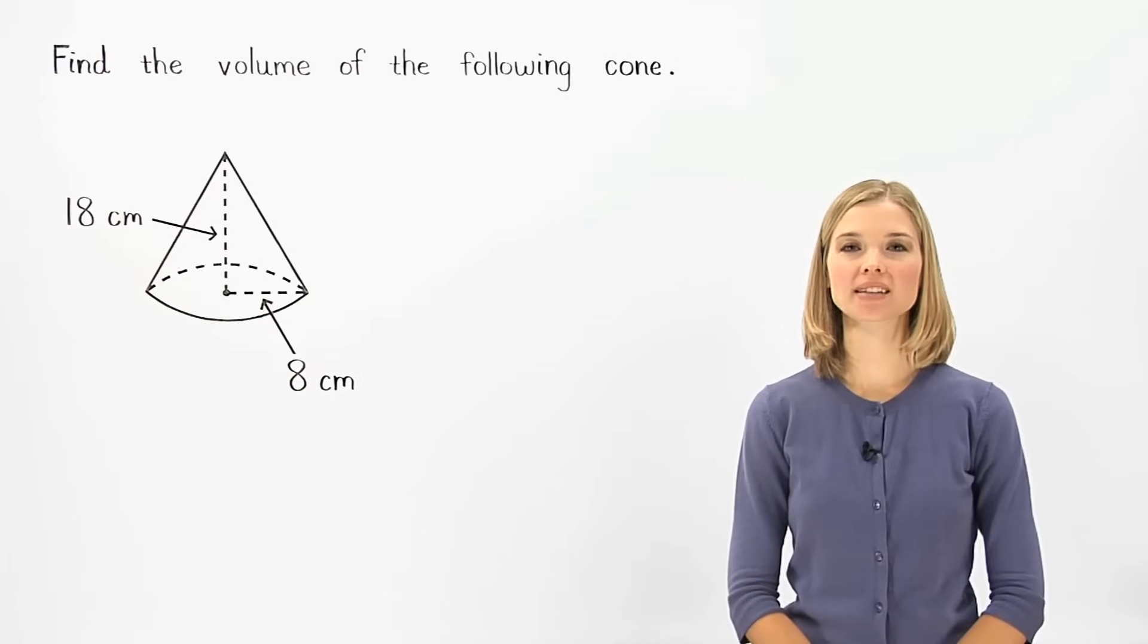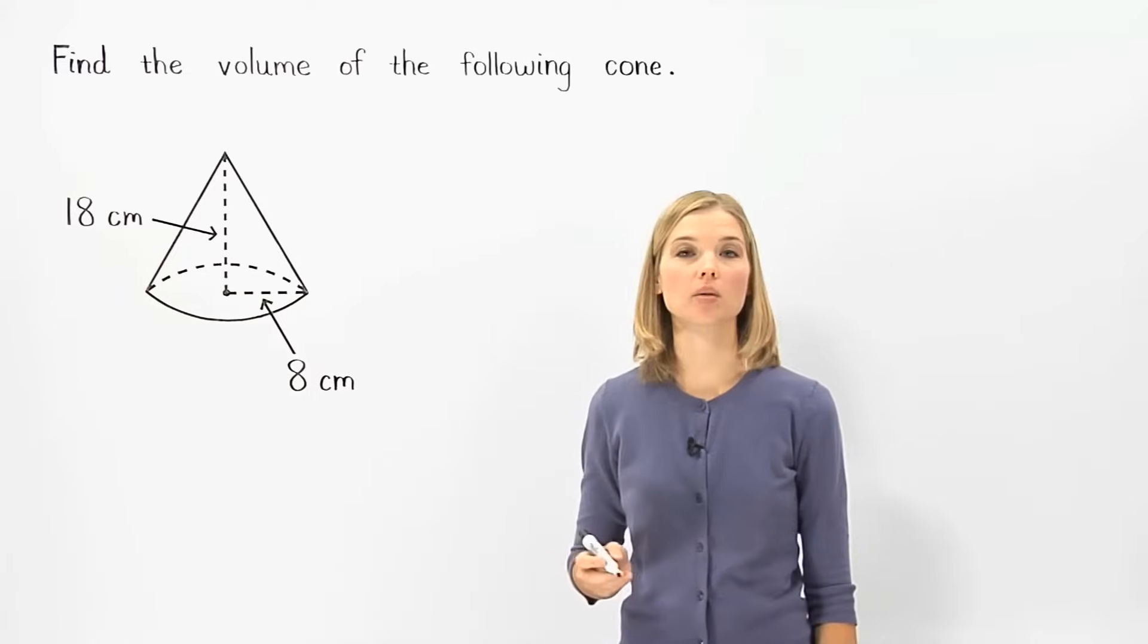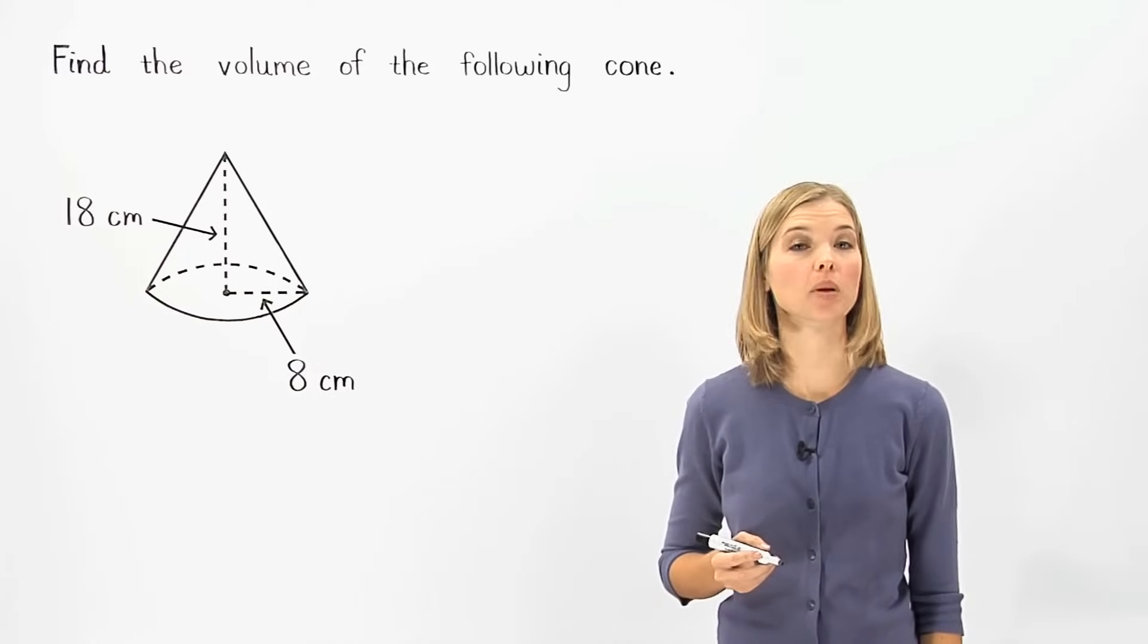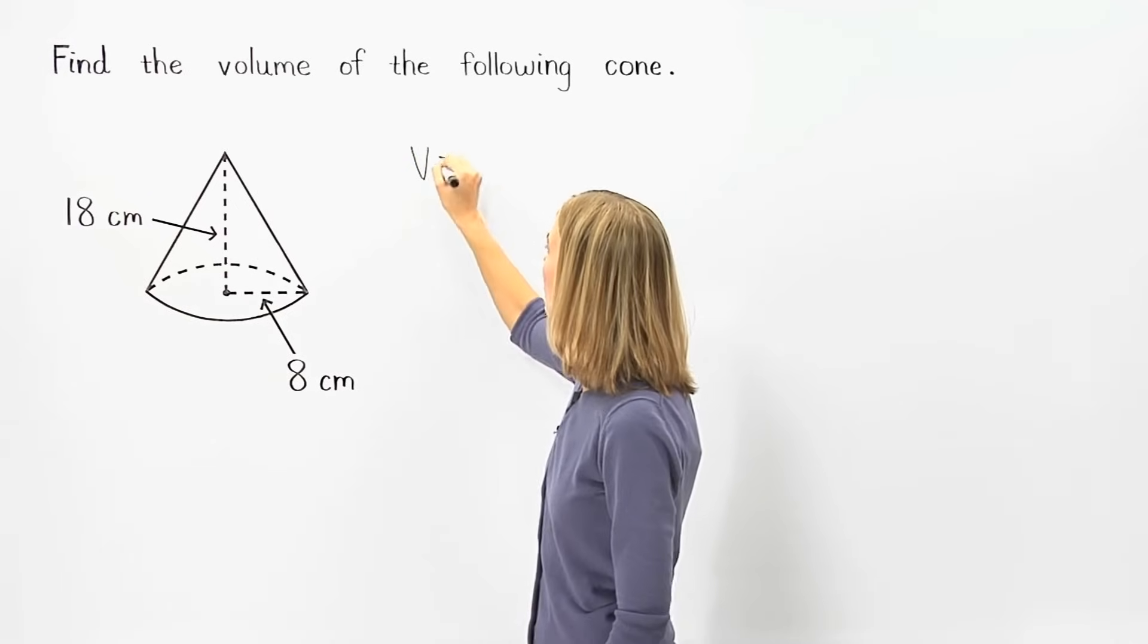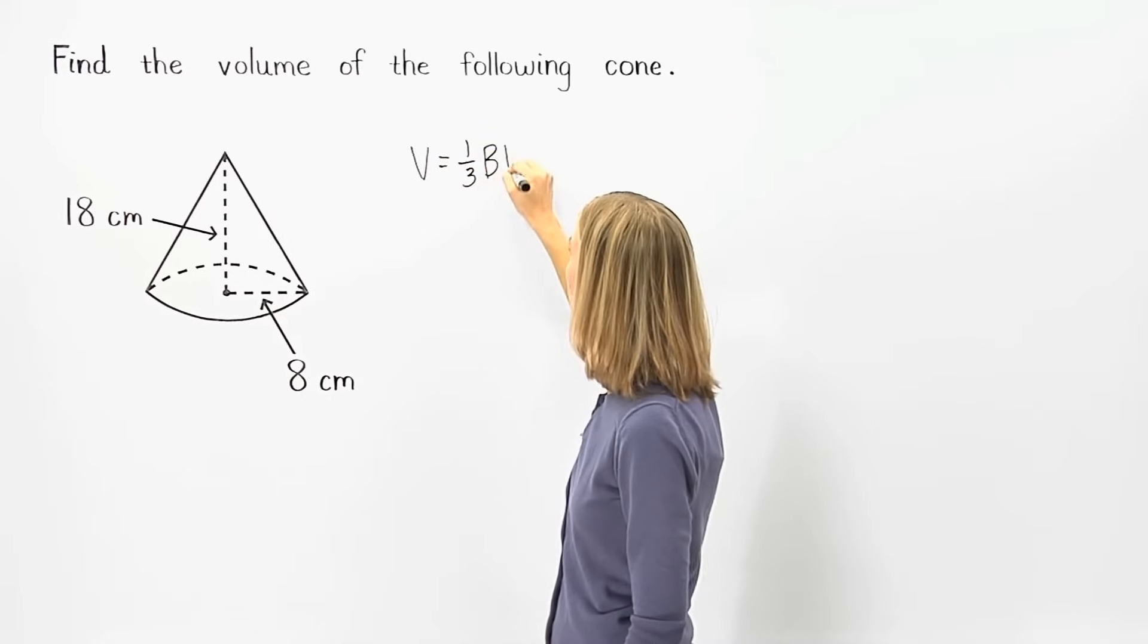In this example, we're asked to find the volume of the given cone. To find the volume of a cone, we use the same formula that we use to find the volume of a pyramid. Volume equals one-third times area of the base times height.